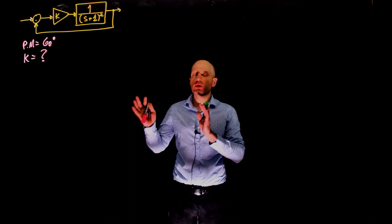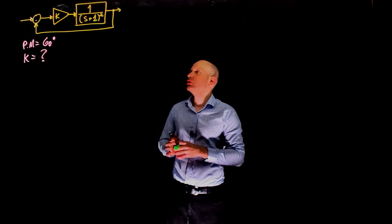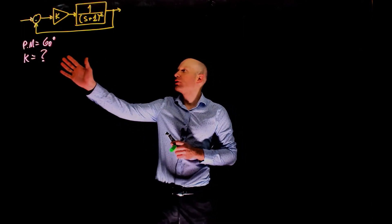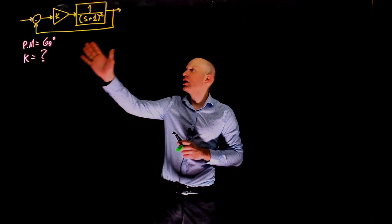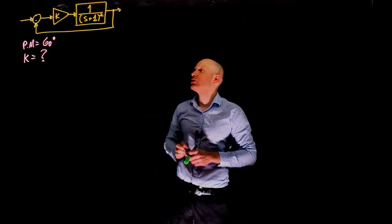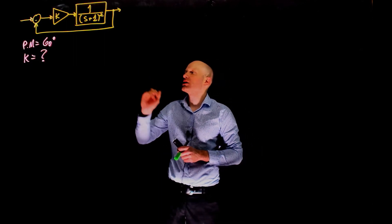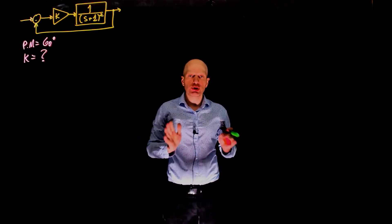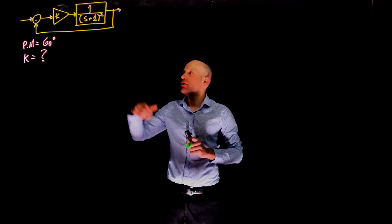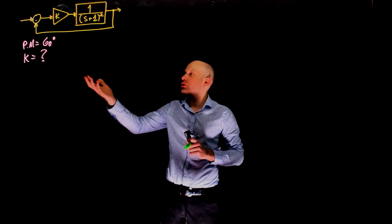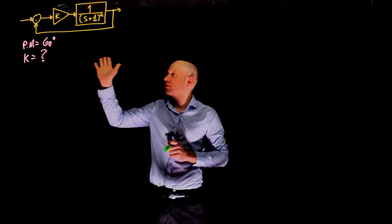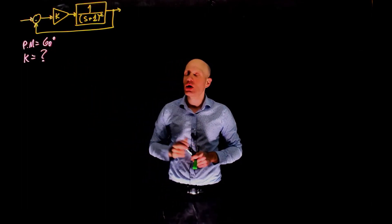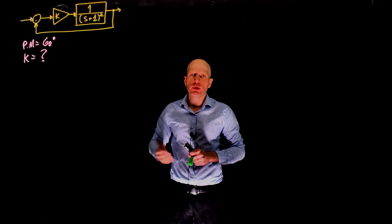In this example, we have a unity feedback loop as shown here, a value of k for the gain, and the plant whose transfer function is 1 over (s+1) squared. The question is very simple: if we want to tune this system to have a phase margin of 60 degrees, what is the value of k?